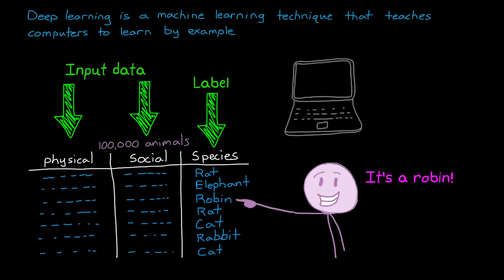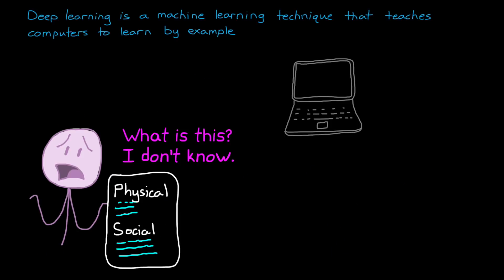Once we have a sufficiently trained model using enough labeled data, we could input data that we haven't classified yet, and the model will apply the most probable label to it.